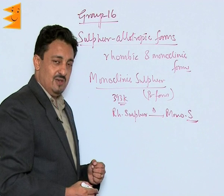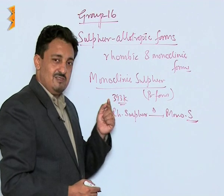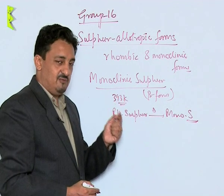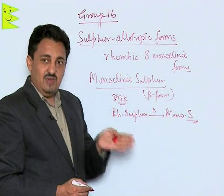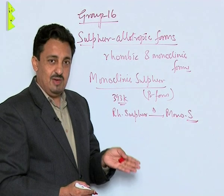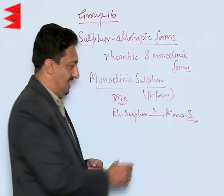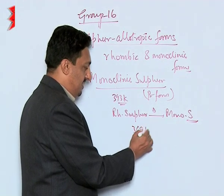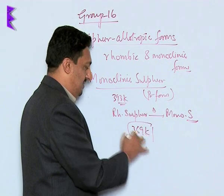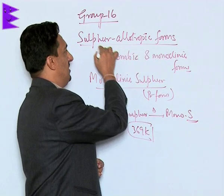The needle-shaped crystals of monoclinic Sulphur are very stable above 369 Kelvin. This temperature of 369 Kelvin is very important in the chemistry of Sulphur.